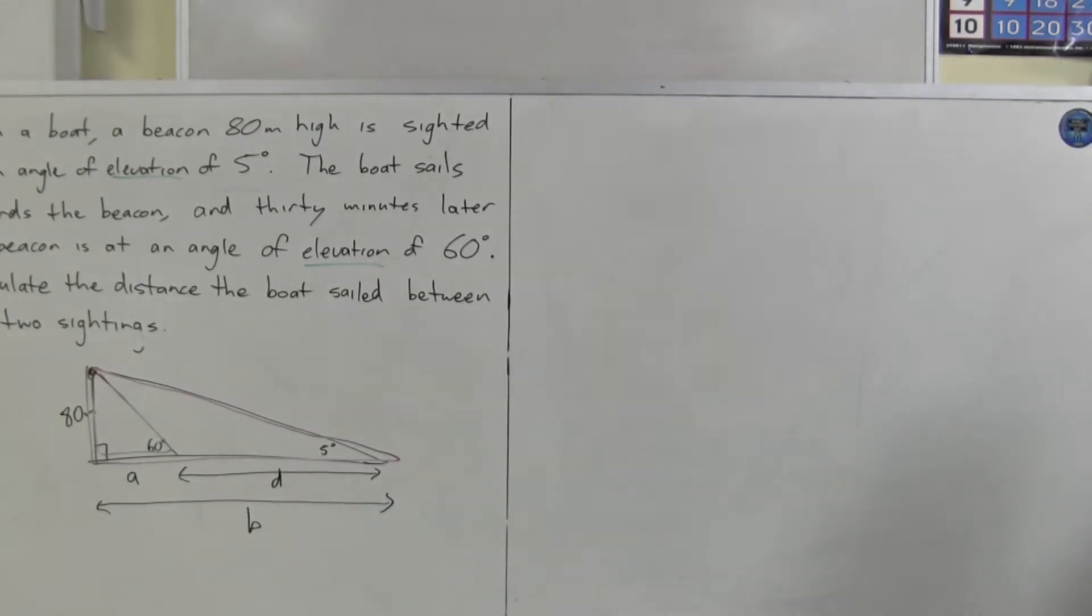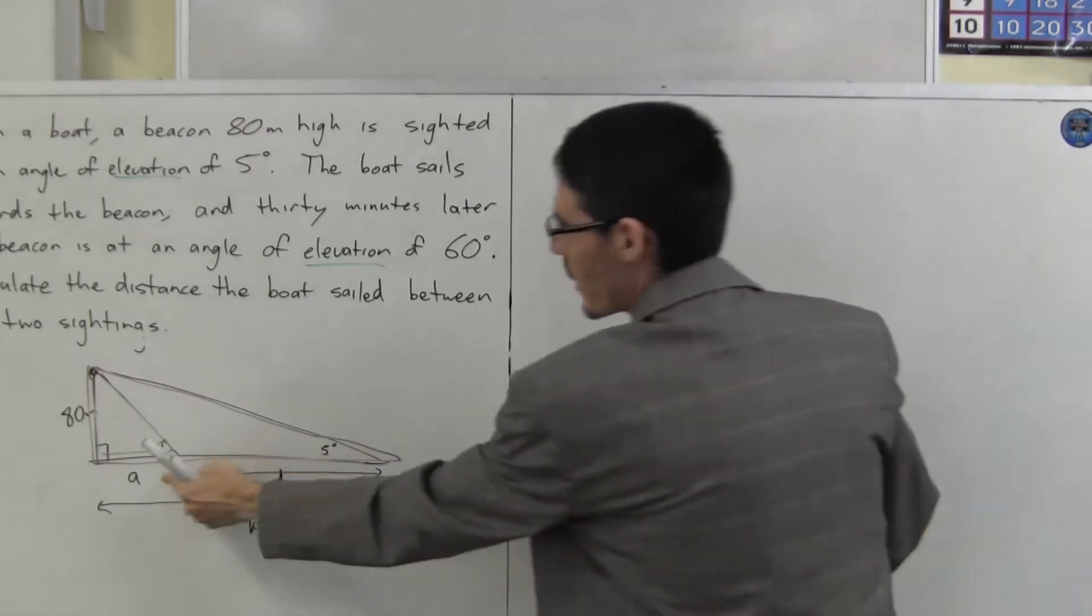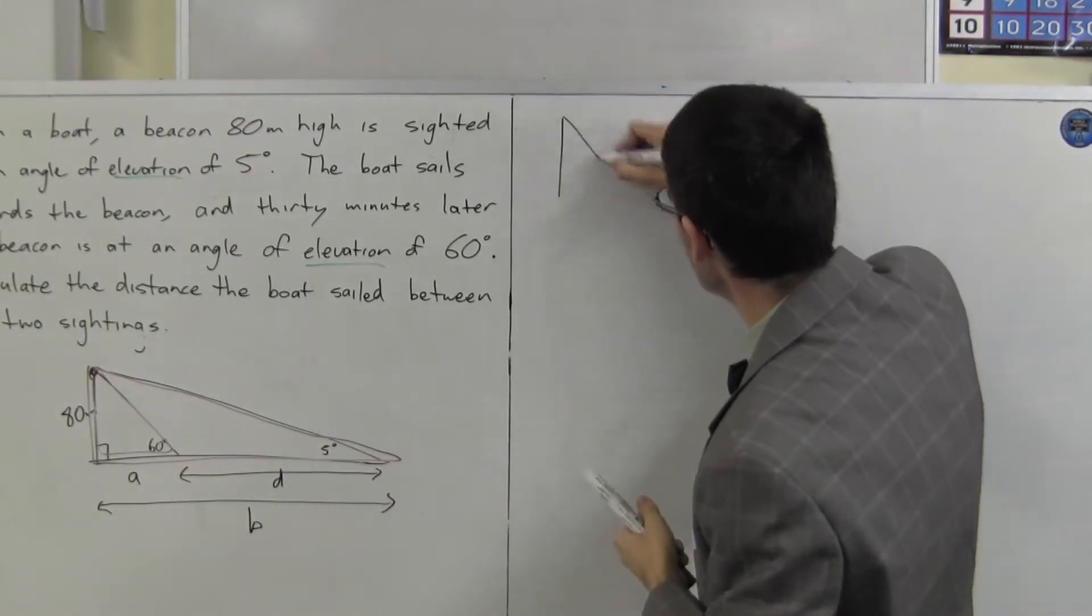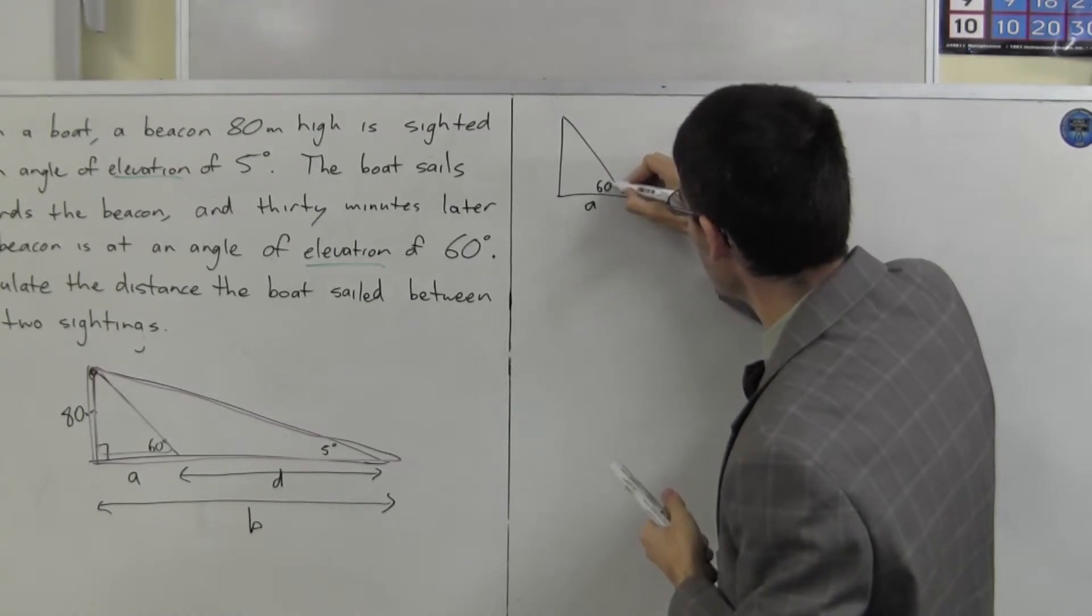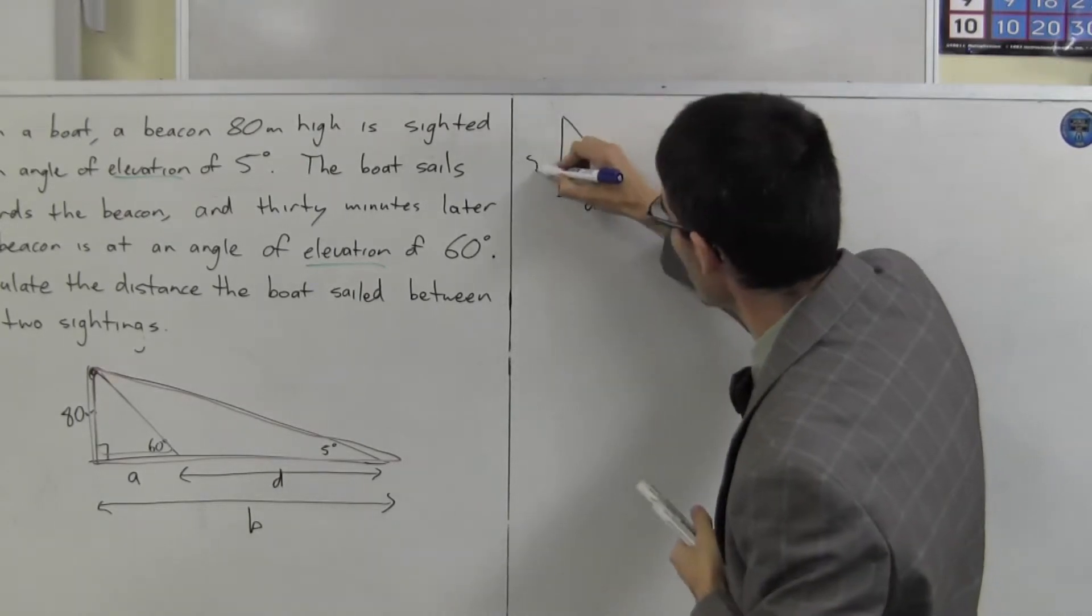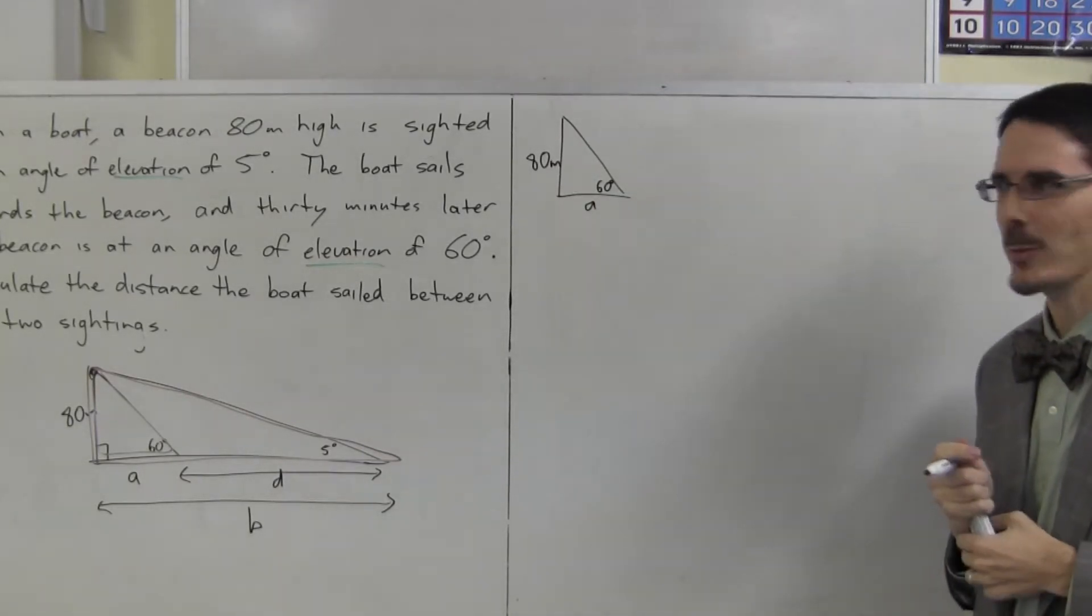Let me move that so you can still see it. So, for A. I have a triangle. That's A. That's 60 degrees. And that's 80 metres. Well, this looks just like the second problem we had.